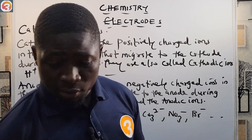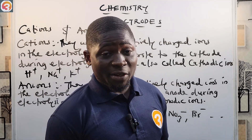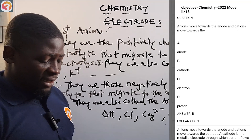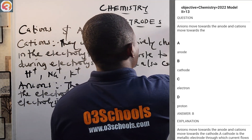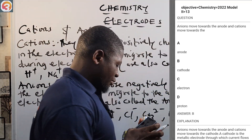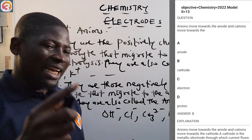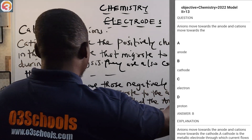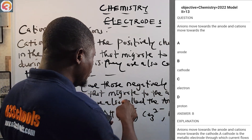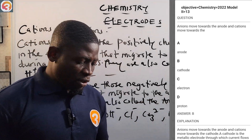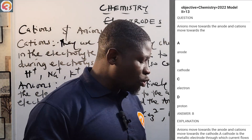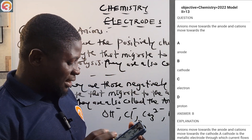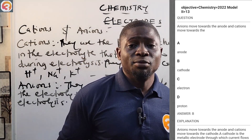Let's now look at that question from the O3School Jump app. The 2022 question number 13 says: anions move towards the anode, and cations move towards the... Anions are the negatively charged ions that migrate to the anode; cations migrate to the cathode during electrolysis. So the answer is option B — cathode. Very simple.